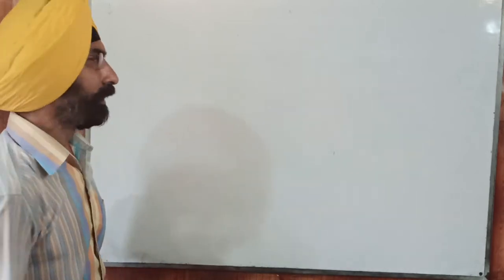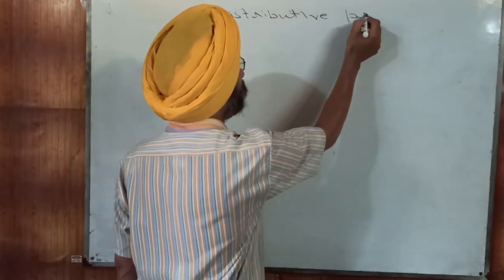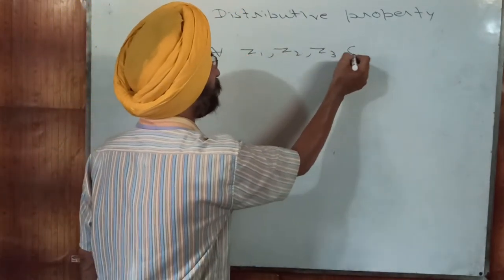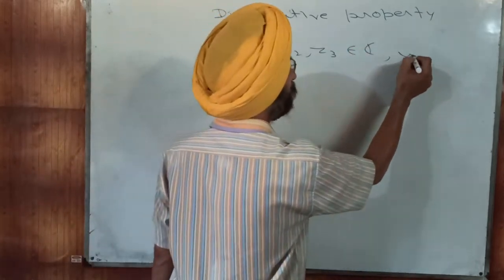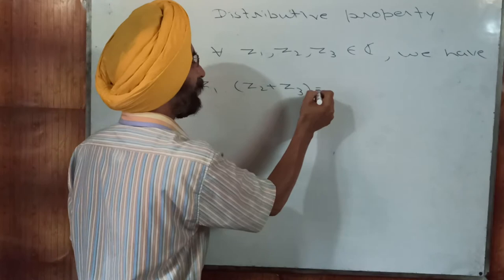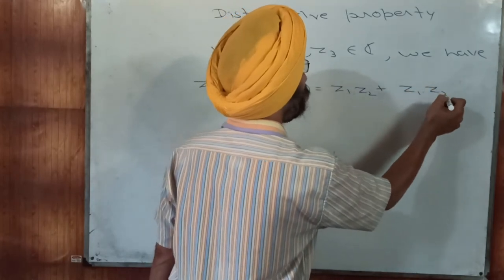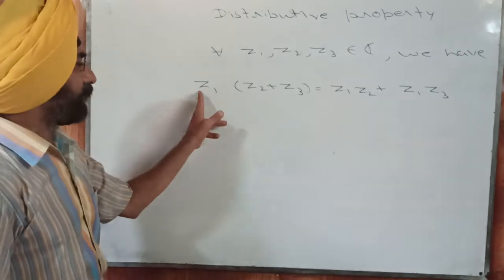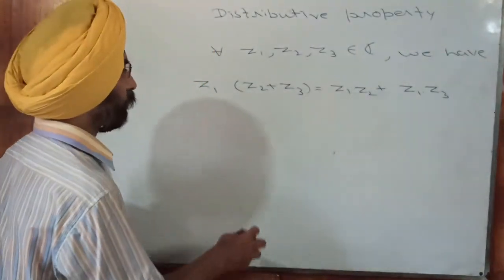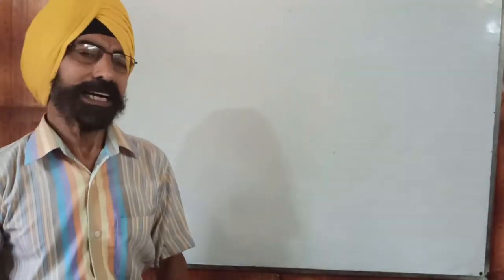There is one more property involving both addition and multiplication — the distributive property. For any complex numbers Z1, Z2 and Z3, Z1 multiplied by the sum of Z2 and Z3 equals Z1 times Z2 plus Z1 times Z3. It is simply like opening the bracket. This is the distributive property for the set of complex numbers.